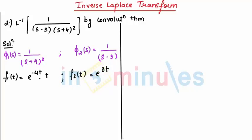So let's replace it now. I can say f 1 of u that is u into e raised to minus 4u whereas f 2 of t minus u can be written as e raised to 3t minus u.